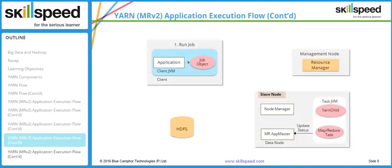The client who submitted the job also keeps polling for status. It is the Application Master's job to keep sending the latest updates to the client whenever they poll — this is why when you run a job on your terminal you can see the job status in terms of percentages step by step. The Application Master is responsible for the full lifecycle of the application. Previously in Hadoop version one, the Job Tracker was the master daemon responsible for lifecycle management, but now that responsibility has been delegated to the Application Master so that the Resource Manager is free.